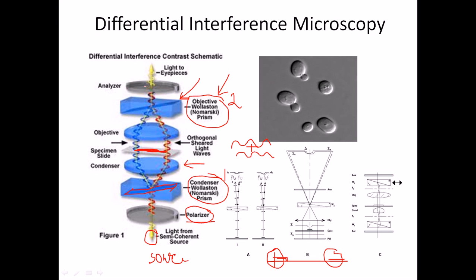The analyzer blocks only light with one directional electric vector oscillation. After the light travels through the specimen, certain altered beams can pass through the analyzer, and we can see them with our eye. Where there is no specimen, all beams are blocked; where there is a specimen, the specimen changes the light oscillation so those beams pass through the analyzer and become visible.